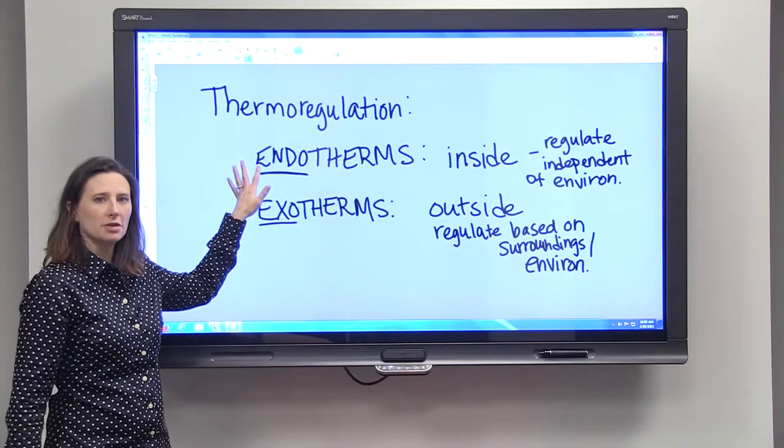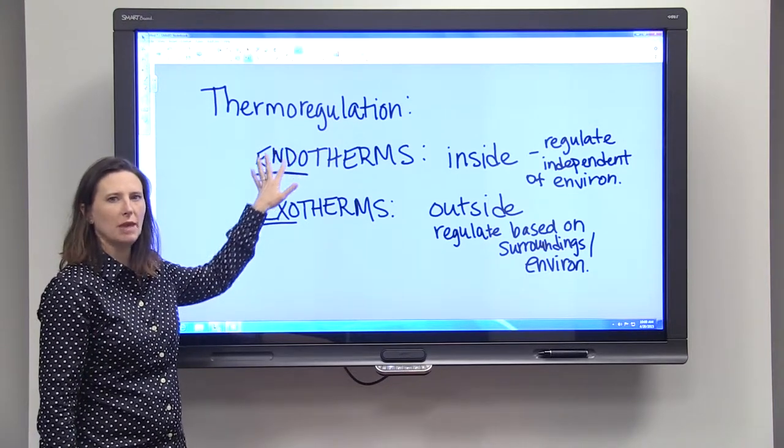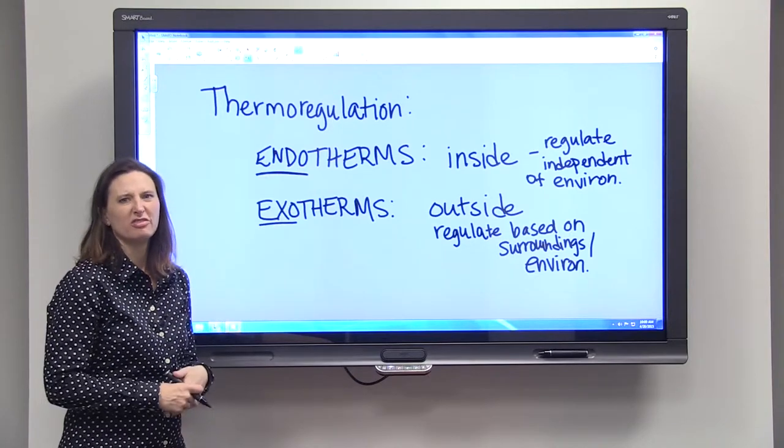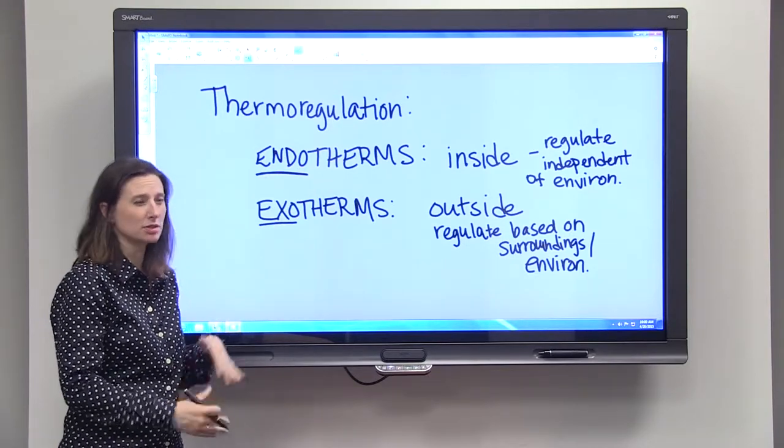So endotherms: mammals, dogs, people, birds. Exotherms: fish, reptiles, lizards, snakes.